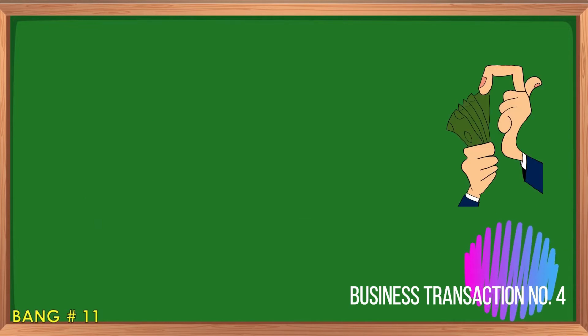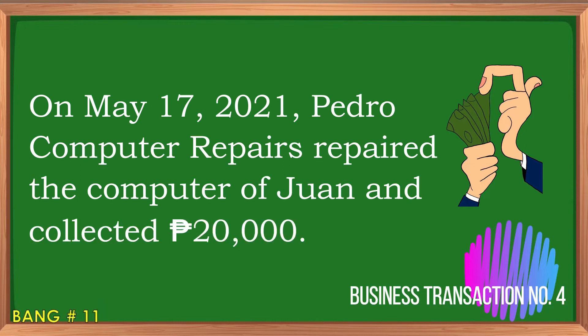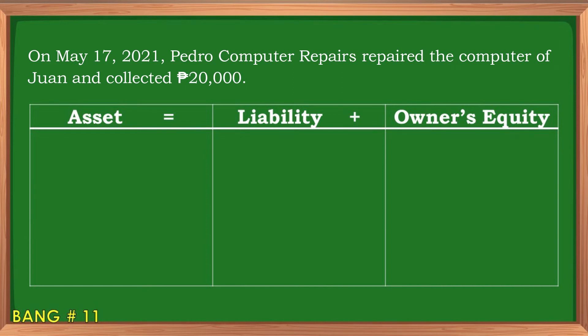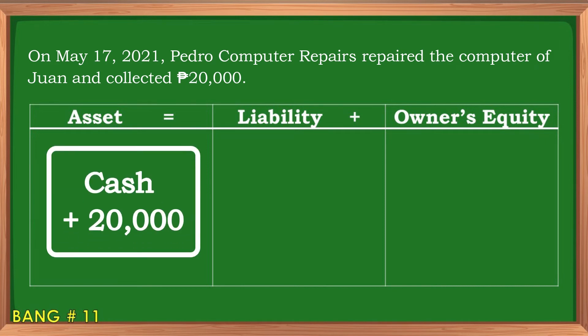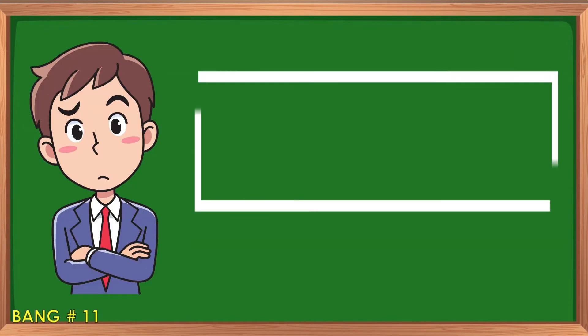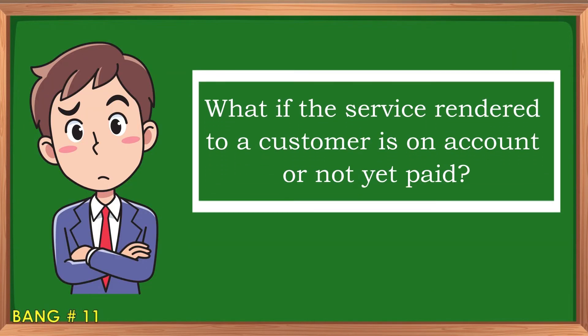Business transaction number four: On May 17, 2021, Pedro Computer Repairs repaired the computer of Juan and collected 20,000 pesos. The 20,000 pesos collected from Juan will be recorded under asset as an increase of cash. Also, it is recorded as an increase in owner's equity using the service revenue account.